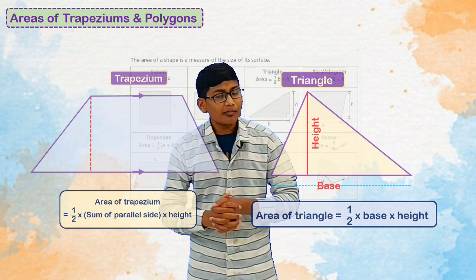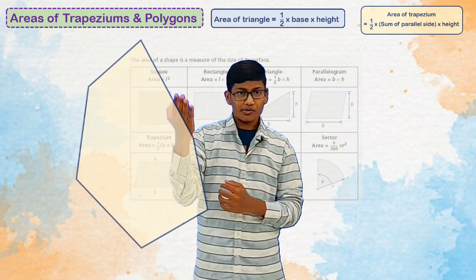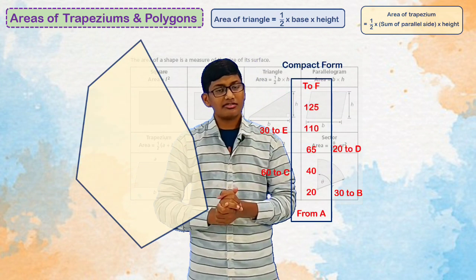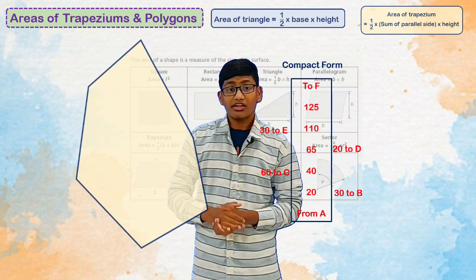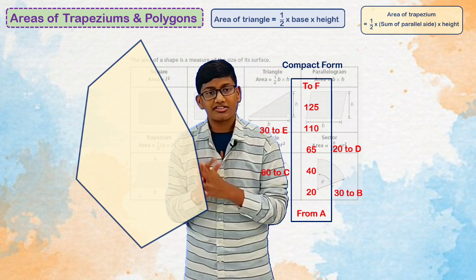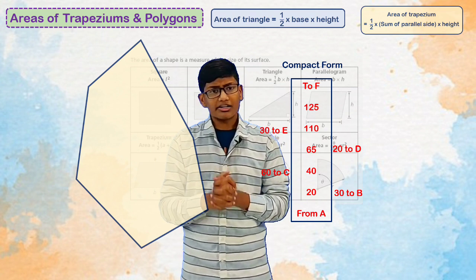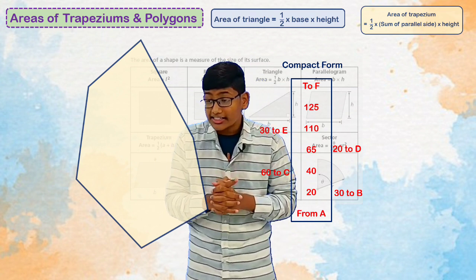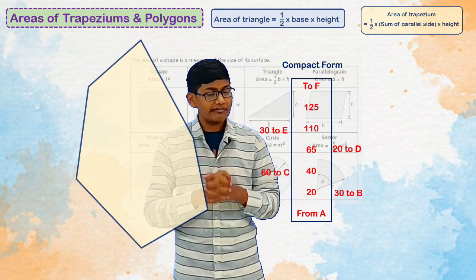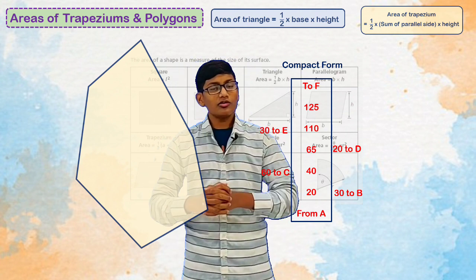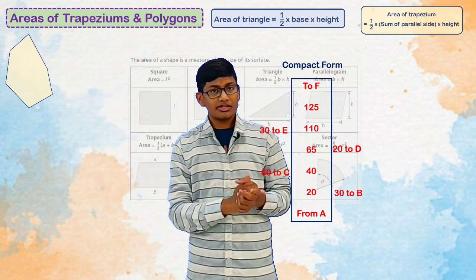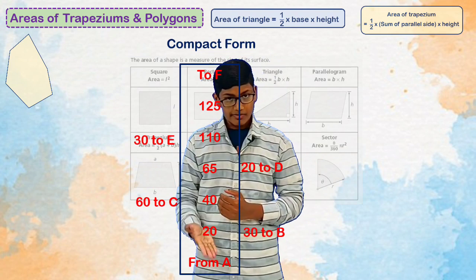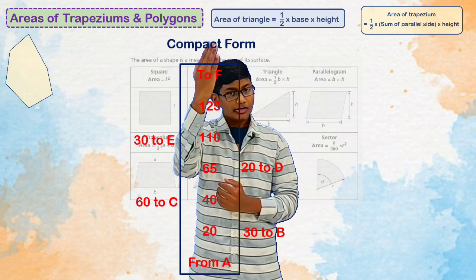So let us go to the problem. Here they have given a diagram and some information about this diagram. We need to calculate the area of this diagram, but we are not familiar with this diagram — still we can calculate the area in a simple way. So let us go through the information first. They have given a compact form from A to F.